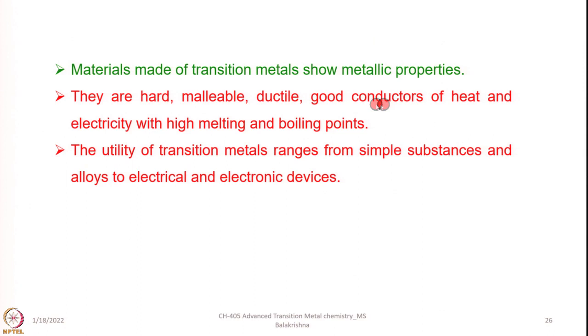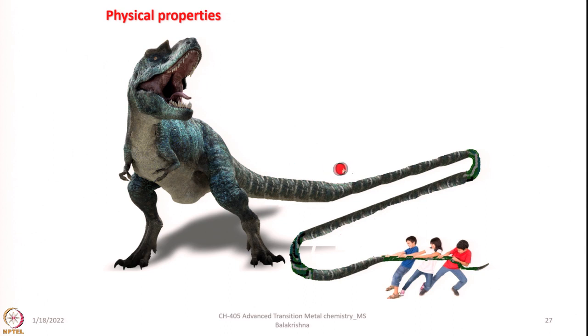Materials made of transition metals show metallic properties — they are hard, malleable, ductile, and good conductors of heat and electricity with high melting and boiling points. The utility of transition metals ranges from simple substances and alloys to electrical and electronic devices. Let me stop at this juncture and focus more about physical properties and other important properties related to transition elements in my next class.